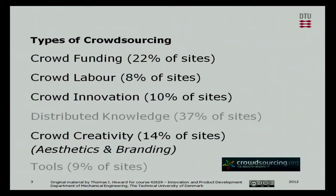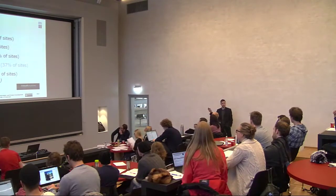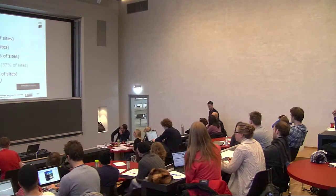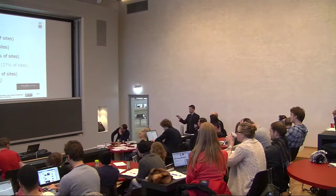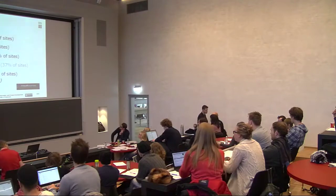According to crowdsourcing.org — a really great website, your first point of call if you want to do anything with crowdsourcing — they suggest there are six types of crowdsourcing at the moment, and we're going to go through four of them. Distributed knowledge crowdsourcing includes things such as the Oxford Dictionary, which I gave as an example in the last section. Wikipedia is also a distributed knowledge crowdsourcing example.